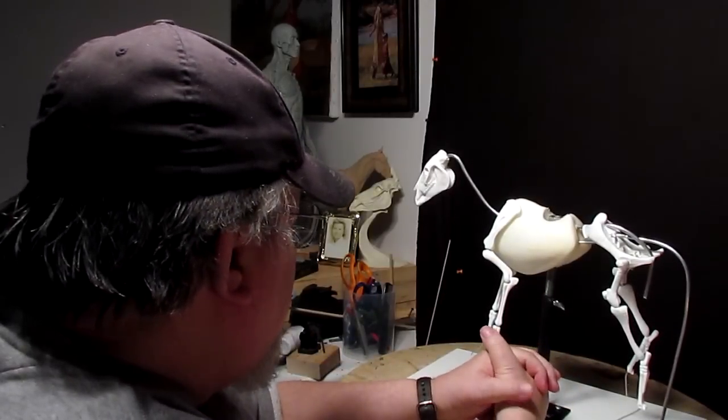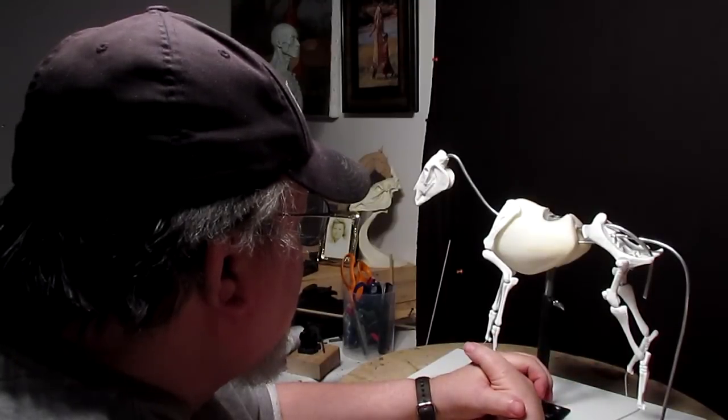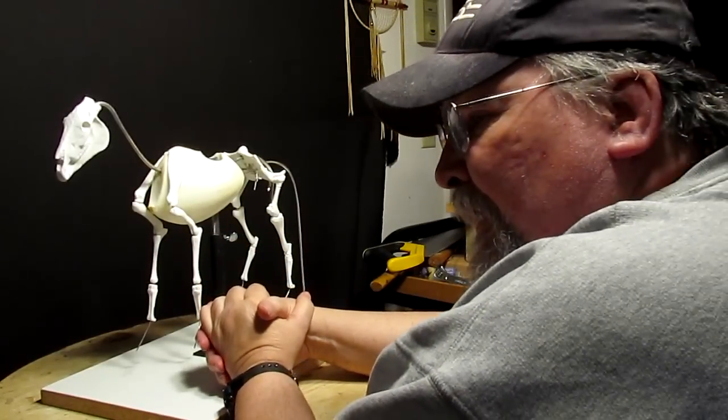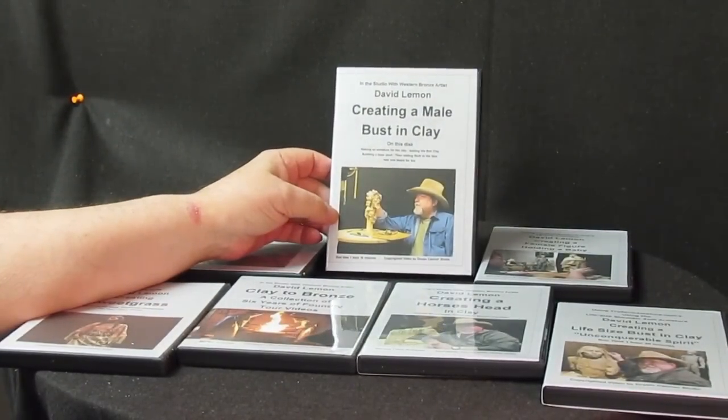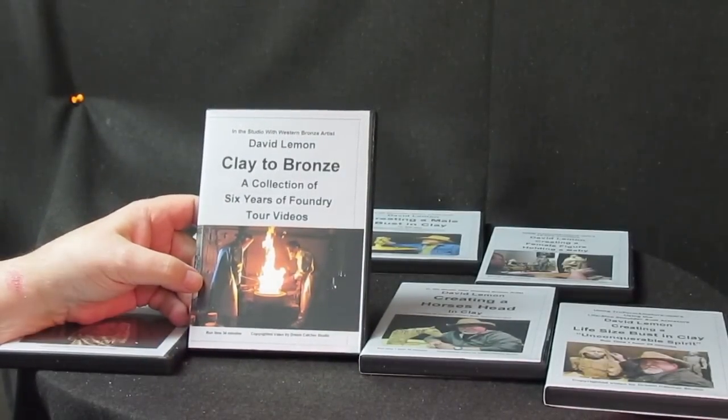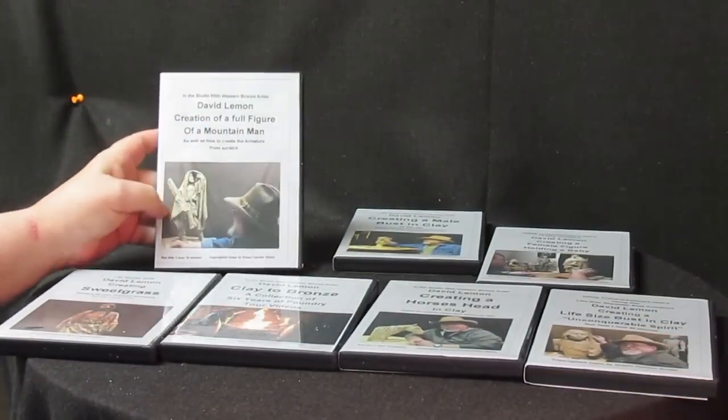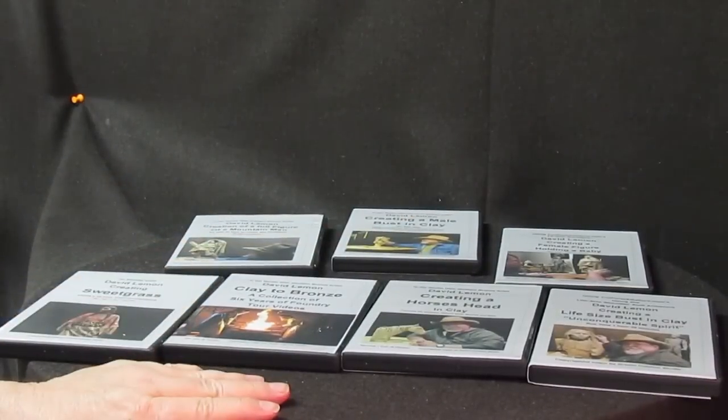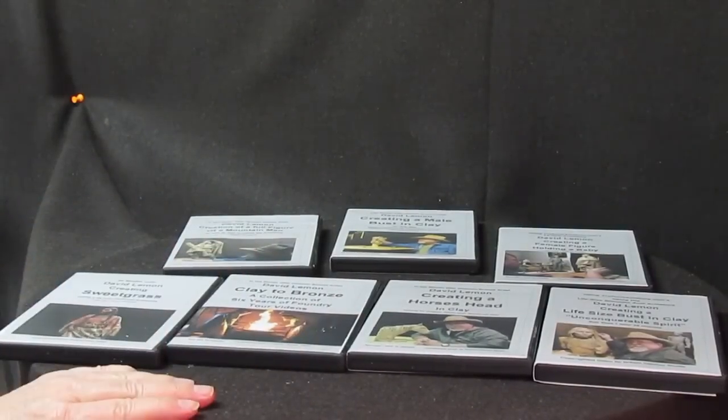If you want to gain some knowledge of 50 years, I've got some DVDs that I'm going to show you right now that you can purchase. I just wanted to show you my seven DVDs that I have available. This one's on creating a male bust in clay. This one is a supplemental video called Clay to Bronze, it's a tour of the foundry. I've got Sweet Grass, I've got a life-size bust, I got a full-size figure of a mountain man and an Indian woman holding a baby. There'll probably be more in the near future. I'm going to be doing one on a horse.